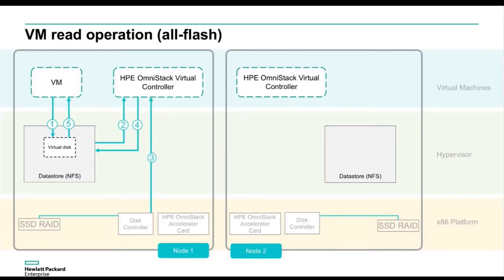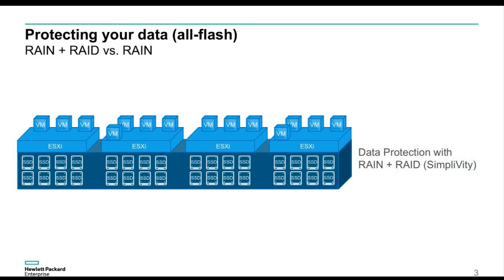At this point we've got data across two nodes with RAID protection — we call that RAIN plus RAID: a Redundant Array of Independent Nodes plus RAID protection. Kind of a belt-and-suspenders approach. The effect is that in our medium and large nodes, which use RAID 6 at the individual node level, we can lose two disks in every one of those nodes and data is still fully available. Virtual machines haven't been affected and no availability has been lost — just a few alerts in the UI.